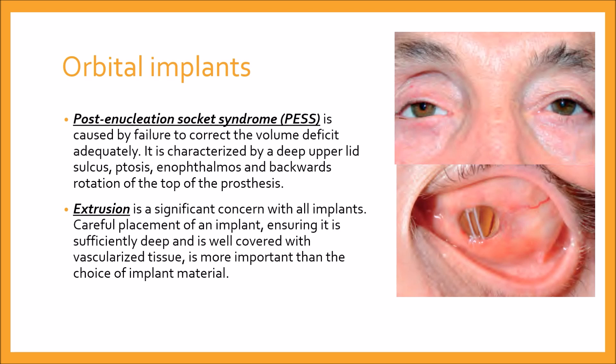Then there is extrusion, which is a significant concern with all implants. Careful placement of an implant, ensuring it is sufficiently deep and well covered with vascularized tissue, is more important than the choice of implant material. As you can see in the bottom picture, this is an extruding orbital implant — this is also a point of concern.